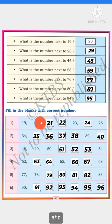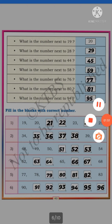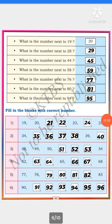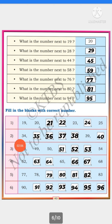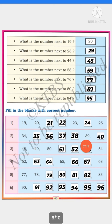Fill in the blanks with correct numbers. Here they have given some numbers and we have to write the missing numbers. See here: 19, 20, 21, 22, 23, 24, 25. Next: 34, 35, 36, 37, 38, 39, 40. Like this, you have to complete this table.